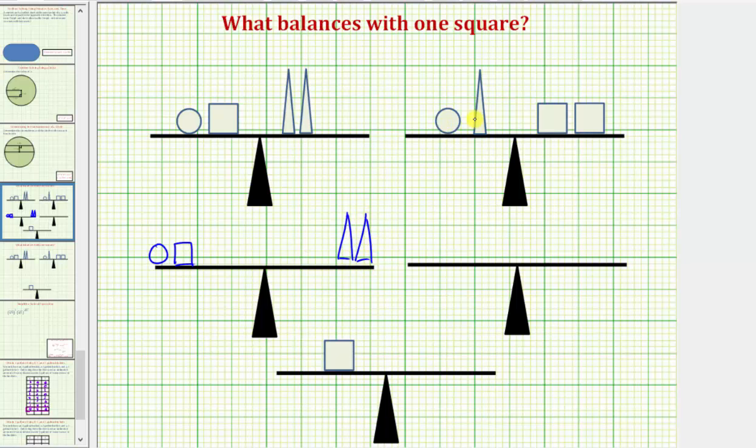Now because we also know that one circle and one triangle balances with two squares, notice how if we place one circle and one triangle on the left and these two squares on the right, the scale would also balance. But instead of doing this, let's place these two squares on the left and the circle and triangle on the right. So we'll place two squares on the left and a circle and triangle on the right.